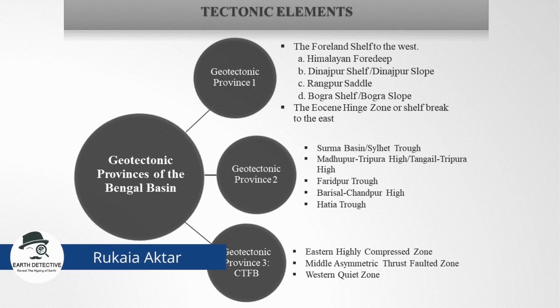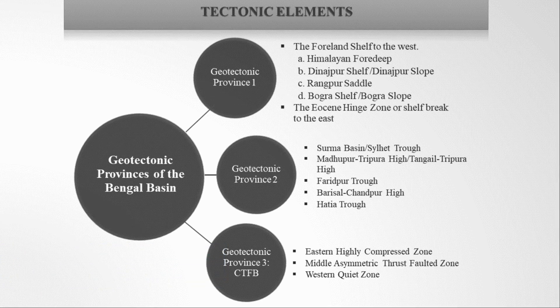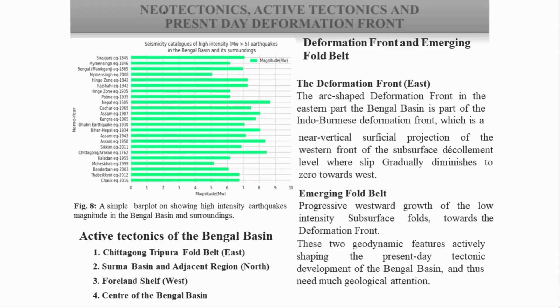Assalamu alaikum, I am Rukayakhtar. I will provide additional information on the Bengal Basin. Starting with the tectonic elements: as discussed, there are three provinces of the Bengal Basin. In Province one there are two major elements — the foreland shelf to the west and the hinge zone to the east. The major element, foreland shelf, is further divided into four sub-elements. Province two has five elements and Province three consists of three elements.